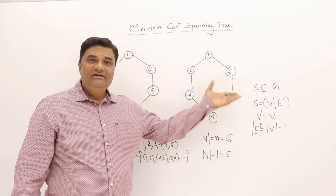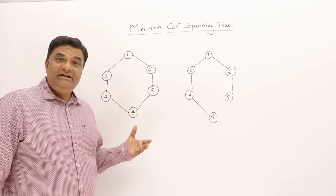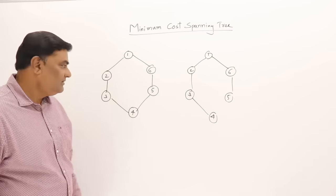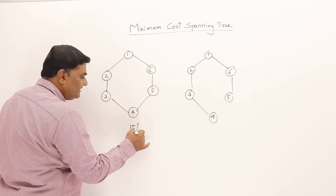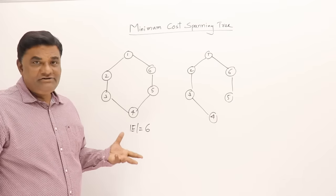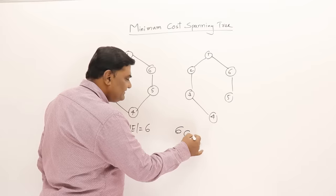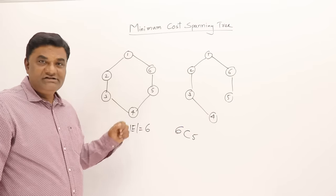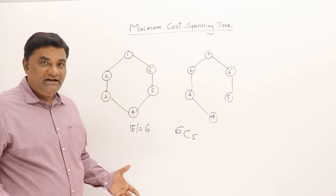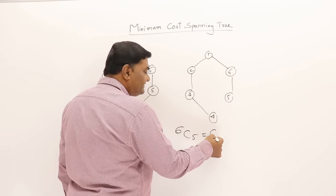For a given graph, how many different spanning trees can be generated? The number of edges is 6. In a spanning tree I should take only 5. So the number of ways is 6 C 5. How many ways can I do that? 6 C 5 is 6 only. So I can have 6 different spanning trees.